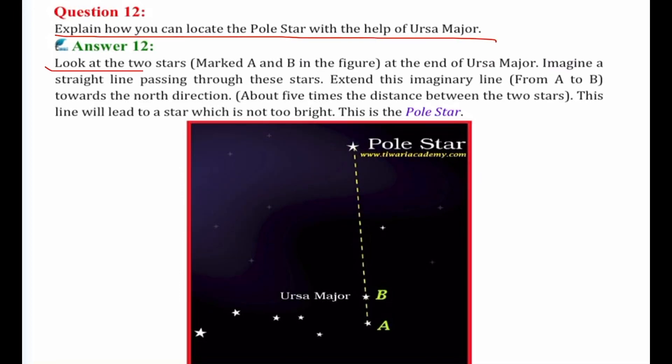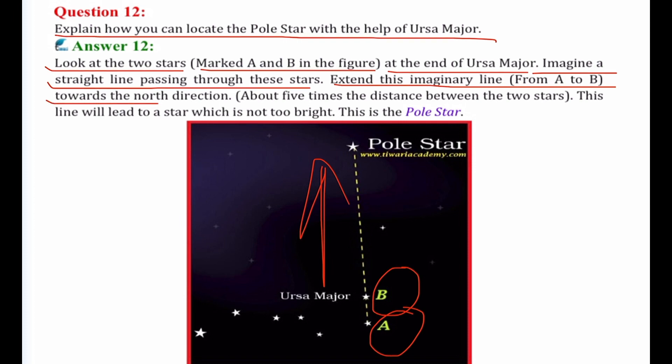Look at the two stars marked A and B in the figure at the end of Ursa Major. A straight line passing through the stars, extend this imaginary line from A to B towards the north direction, about five times the distance between the two stars. This line will lead to a star which is not too bright. This is the pole star.